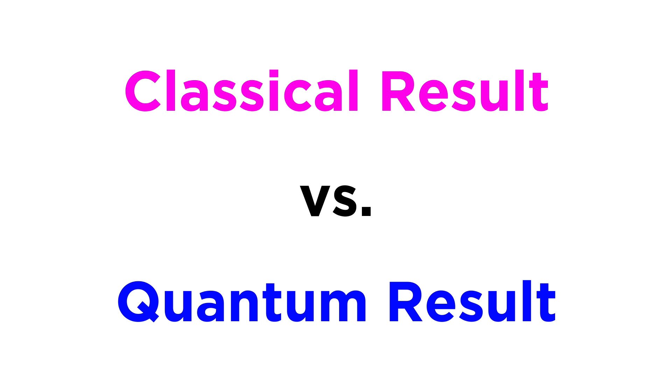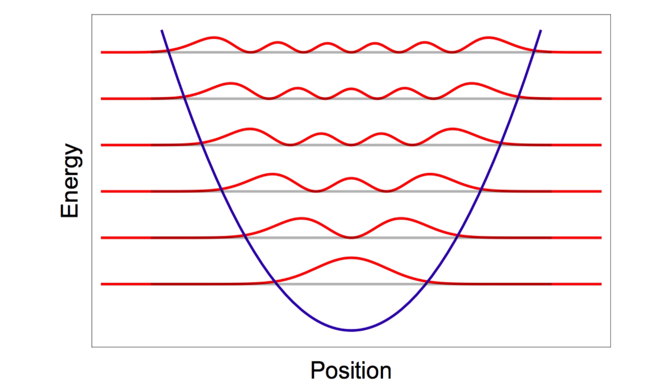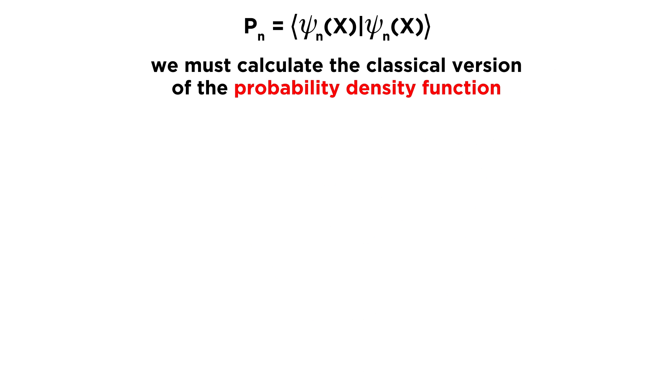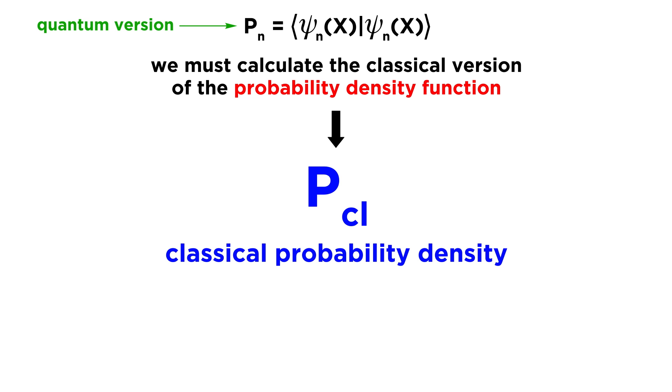To finish things off, let's perform a quantitative comparison between the classical result that we found in the first tutorial and the quantum result we just found here. Since the easiest way to visualize and understand the quantum result is by looking at graphical representations of the probability density function, we will make use of these here. To do this, we first need to calculate the classical correspondent of the probability density function. We will call this classical probability density, and we will represent it with PCL as opposed to simply P, which will continue to denote the quantum probability density.